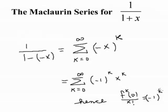Now let's take a look at an example. Suppose we wish to find the Maclaurin series for 1 over 1 plus x. Well, we can use the geometric series theorem. Write 1 over 1 plus x as 1 over 1 minus negative x. Then that can be written as the sum from k equals 0 to infinity of negative x to the k, or the sum from k equals 0 to infinity of negative 1 to the k times x to the k.